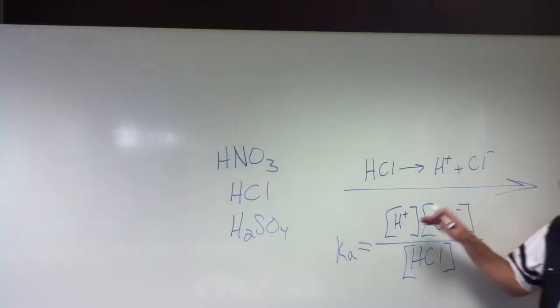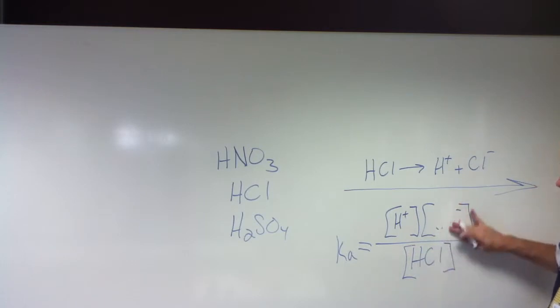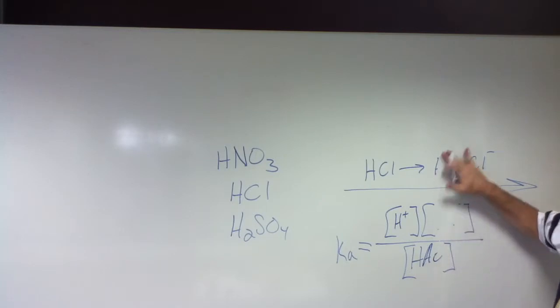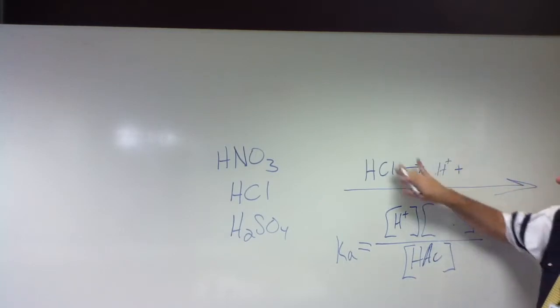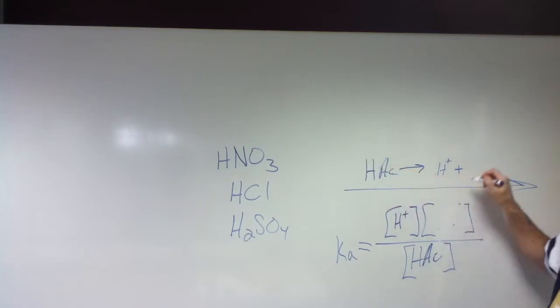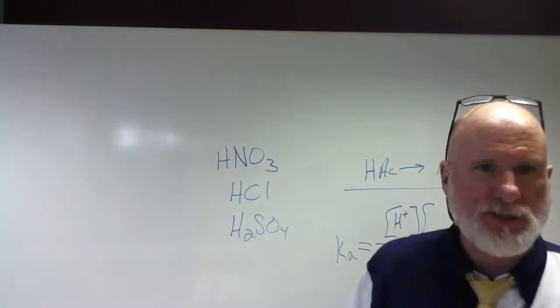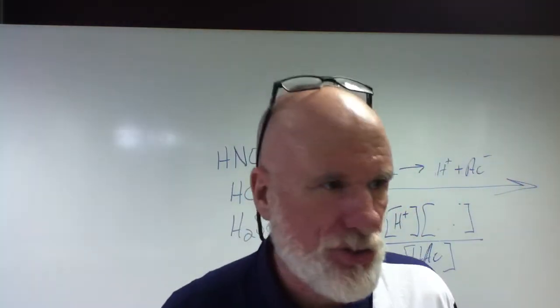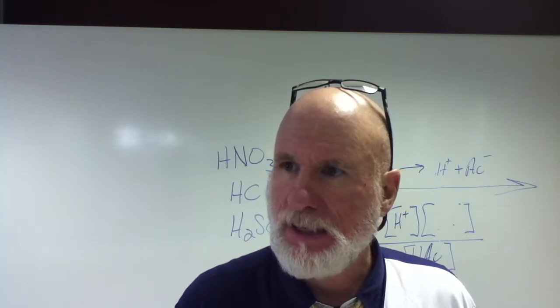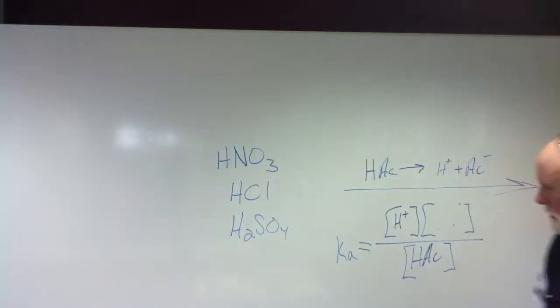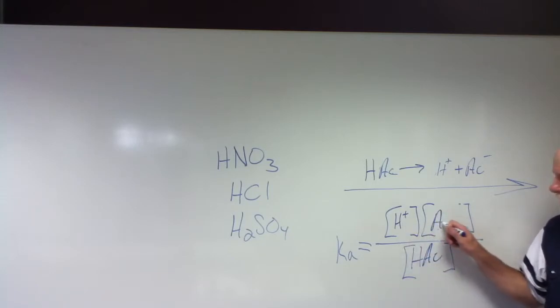But what happens if this is a weak acid like acetic acid? HAC is just an abbreviation for C2H3O2 acetate. So the denominator is going to be large. Isn't that going to be very small?